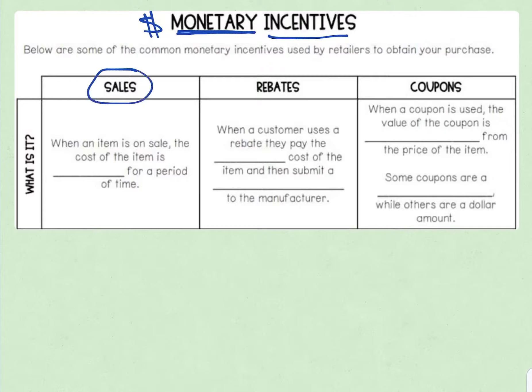The first type that you have to know about are sales. When an item is on sale, the cost of the item is reduced for a period of time. Reduced means lowered, and this could be by a percentage. It could be buy one get one half off, buy one get one free, or it could be reduced by a dollar amount.